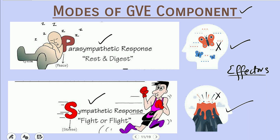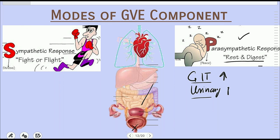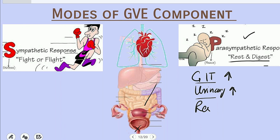The parasympathetic response occurs in peaceful conditions and is also known as the rest and digest phase. In this phase, we activate the gut system and the urinary system for normal vegetative functions — digestion and absorption. There will be peristalsis and relaxation of the sphincters for defecation and urination. The GIT and urinary system will be stimulated, while the respiratory system and the heart will work normally at a regular pace and rhythm.